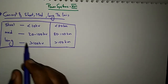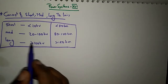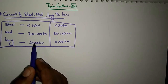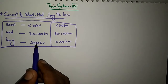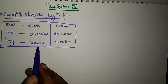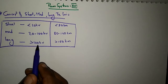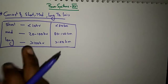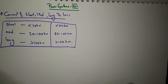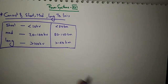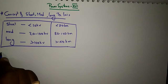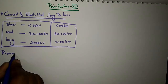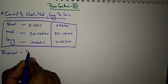Exam questions may be asked from this point of view. For example, if the operating voltage is 35 kV, what type of transmission line is it? Since 35 kV falls between 20 and 100 kV, it would be a medium transmission line.